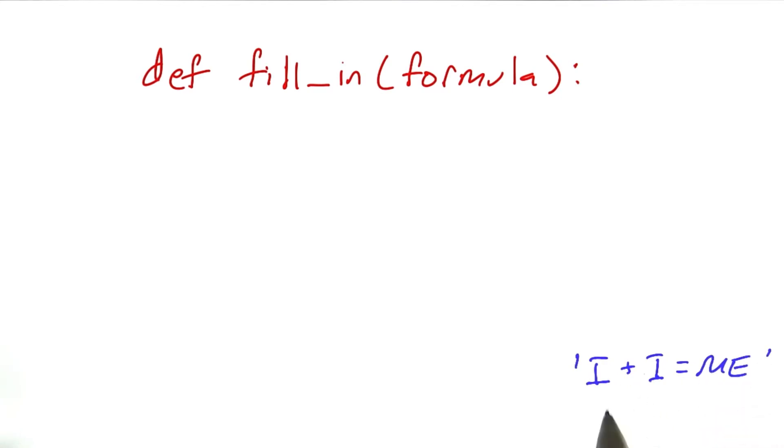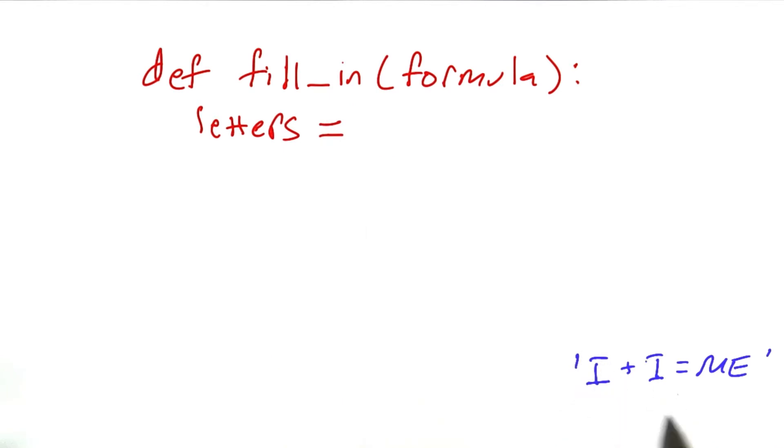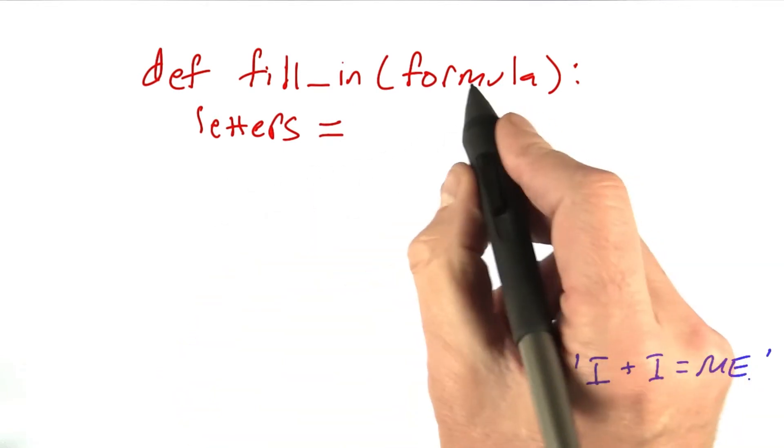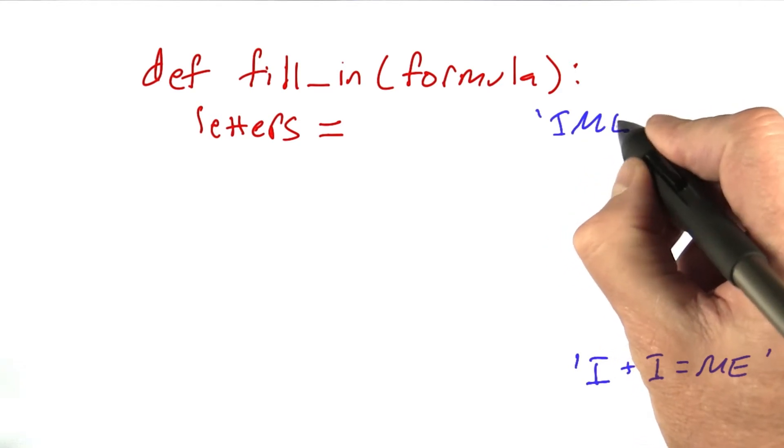And what we have to do then is find out what all the letters are in this formula and fill in all possible values for digits for those letters. So it seems like a good thing is to collect all the letters. And in this particular formula, the letters should be i, m, and e.